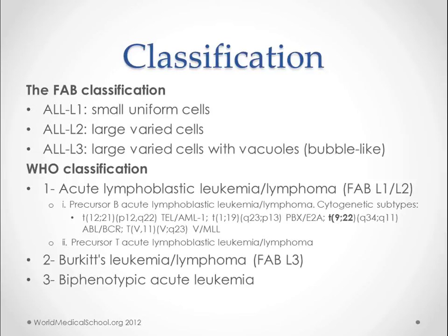The WHO has three major categories of classification. The first is essentially a combination of FAB L1 and L2, broken out into cytogenetic subtypes — for example, the Philadelphia chromosome and other mutations. Those mutations will tell us what the prognosis is and how we want to treat. These can be B cell or T cell precursors; T cell ones are associated with poor prognosis and treated more aggressively. The old FAB L3 is just the Burkitt's lymphoma type, and the third category is biphenotypic acute leukemia.